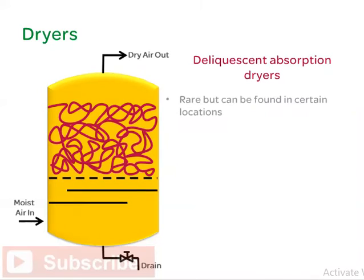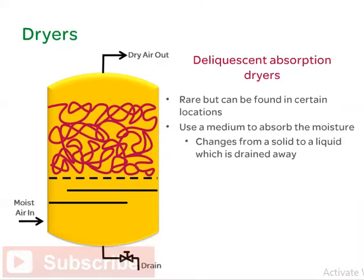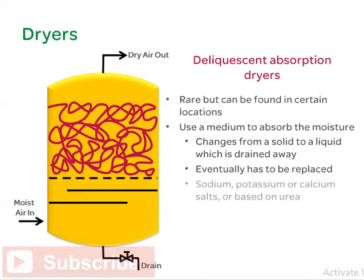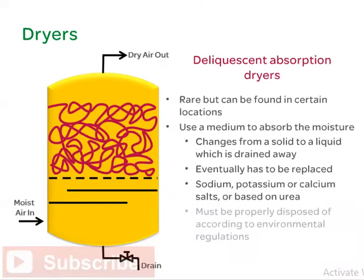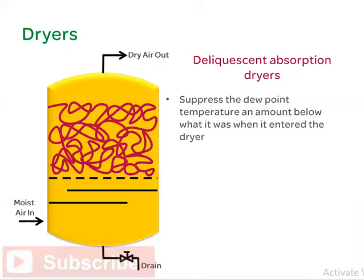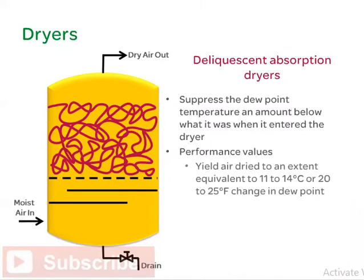Deliquescent absorption dryers are rare but can be found in certain locations. They use a medium to absorb the moisture. Over time, the medium changes from a solid to a liquid which is drained away and eventually has to be replaced. The medium may be sodium, potassium, or calcium salts or based on urea. The liquid must be properly disposed of according to environmental regulations. These dryers suppress the dew point temperature an amount below what it was when it entered the dryer. Performance values yield air dried to an extent equivalent to 11 to 14 degrees Celsius, or 20 to 25 degrees Fahrenheit, change in dew point.